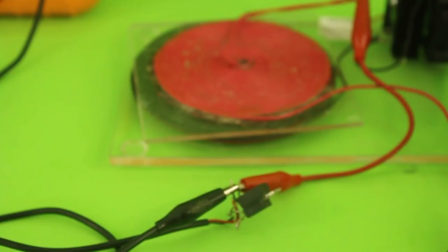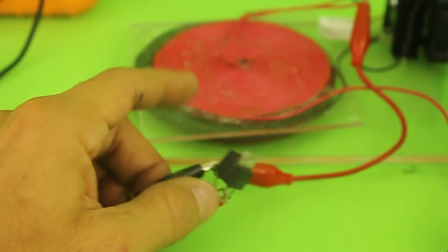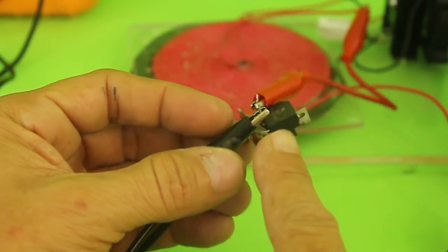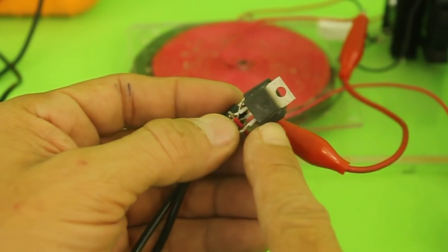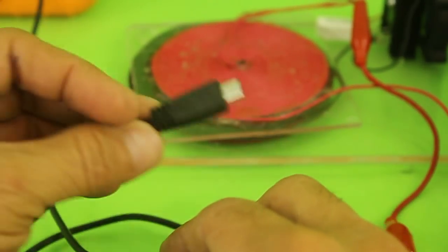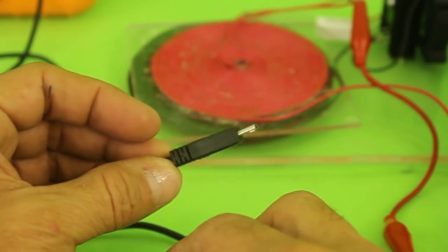Now in order to use it for a cell phone charger I connected the receiver coil to a bridge rectifier and then to a 5 volt voltage regulator because the cell needs 5 volts. From there it goes to a wire that has the mini USB connector.